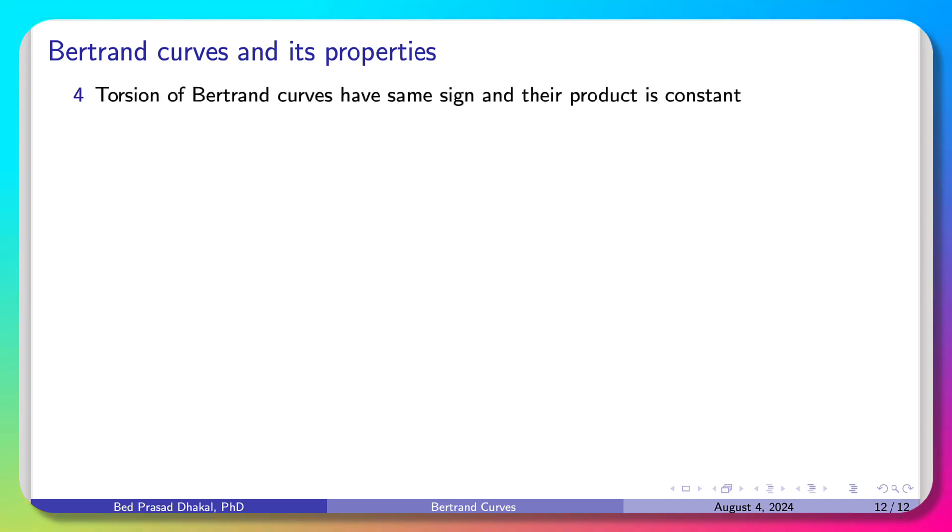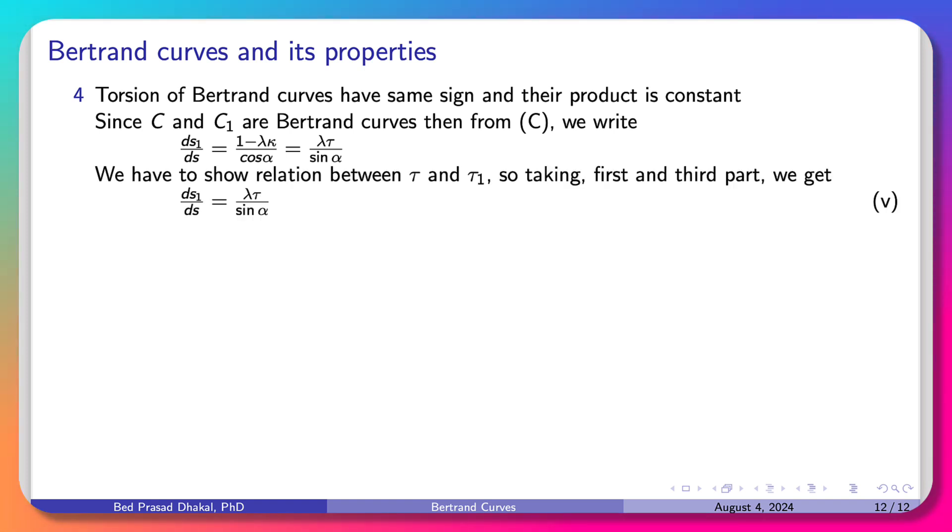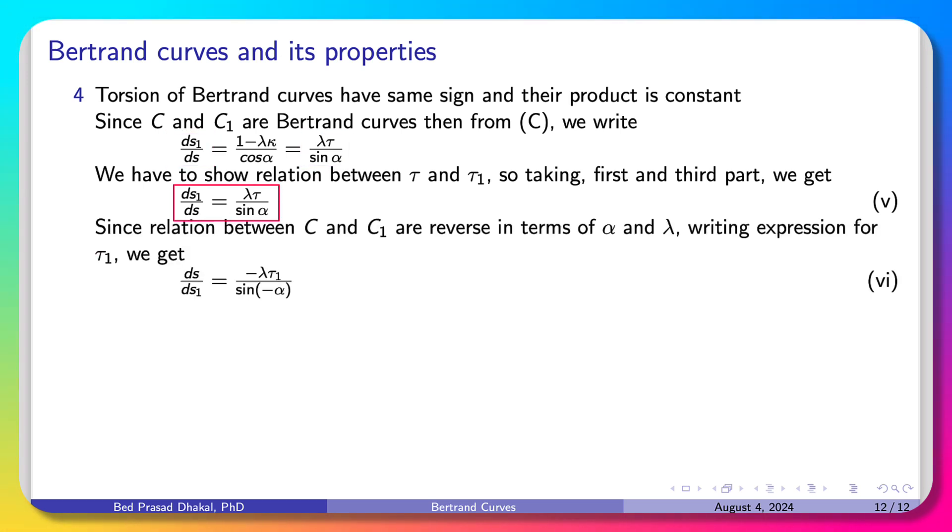Now we move to the fourth property: torsion of Bertrand curves have same sign and their product is constant. We are going to prove this. We have to show the relation between τ and τ1, so we'll take the third identity, where ds1 by ds equals λτ by sin α. Now, for the relation between curves C and C1, we reverse it: ds1 by ds becomes ds by ds1.